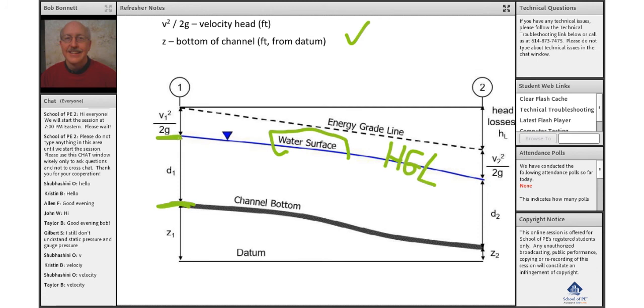And then if we knew what the velocity was in this channel and we squared it, divided by 2g, we could come up with the energy grade line. So just like we saw in pipe flow,